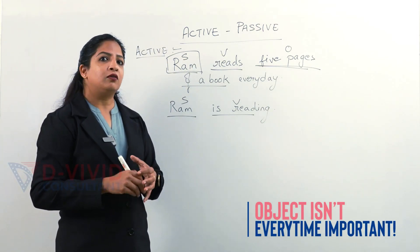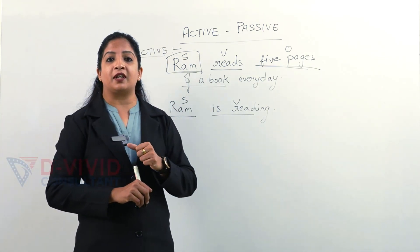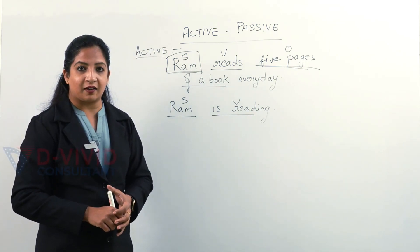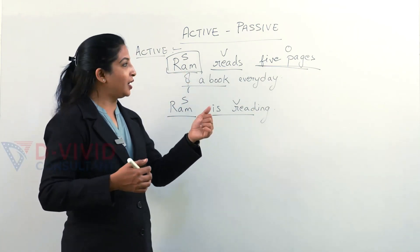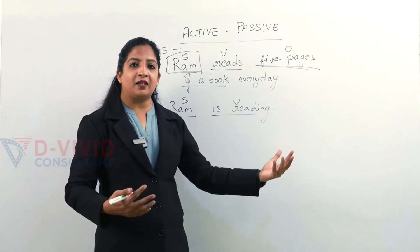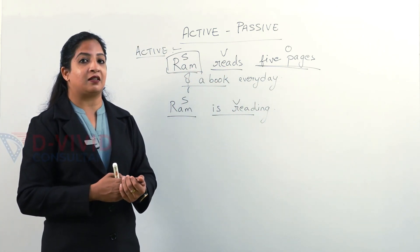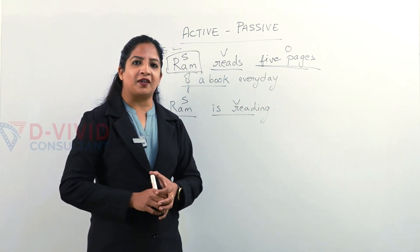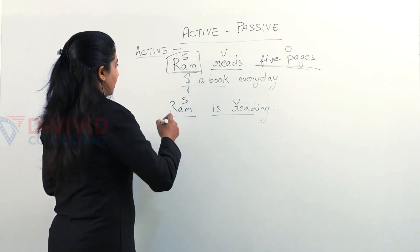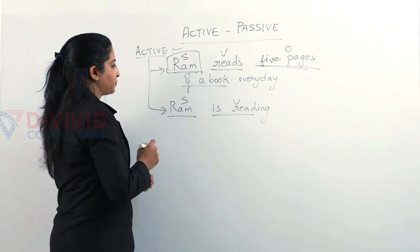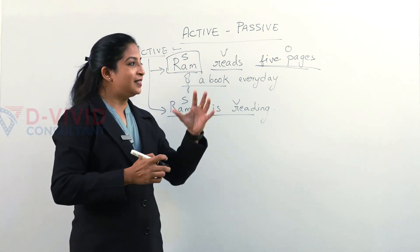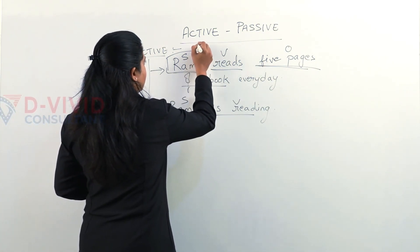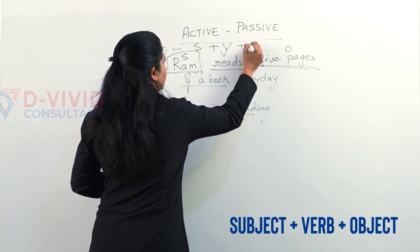The object is not important every time. It becomes important when we need to give clarity to someone. If I need to tell exactly what Ram needs or is doing, I will add the object; if not, I will not add it. Both of these are active sentences, and the concluding structure of active voice is: Subject + Verb + Object.